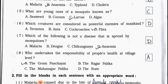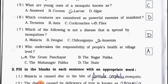Number 6: Which creatures are considered as powerful enemies of mankind? A. Termites, B. Ants, C. Cockroaches, D. Flies. Answer is option D — Flies.